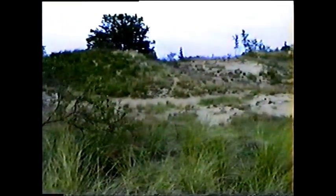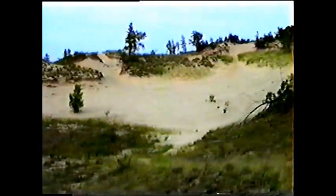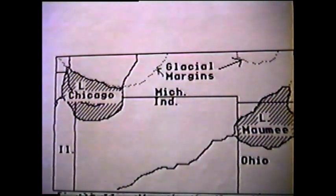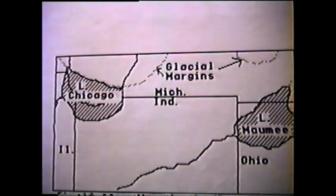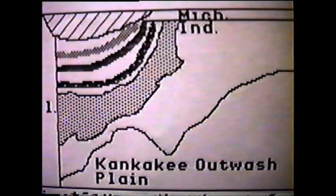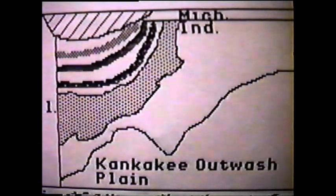As the ice sheets were retreating, the ancestors of Lake Michigan were forming. The first glacial lake to form in what is now northwest Indiana was what geologists call Lake Chicago — a body of water trapped between the glacier on the north and the Valparaiso Moraine on the south. Lake Chicago formed about 15,000 years ago, and changed its size and thus shoreline several times. This map shows three shorelines of Lake Chicago north of the Valparaiso Moraine. The oldest is the Glenwood shoreline, which parallels Route 30 in Merrillville.